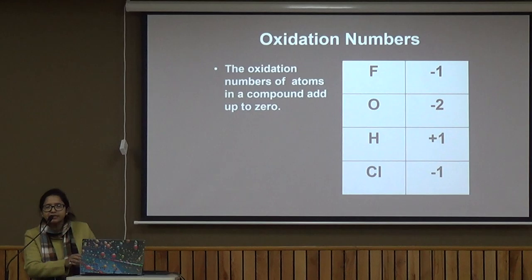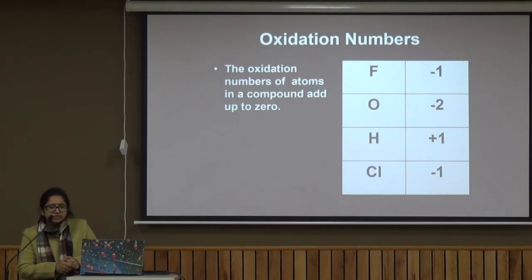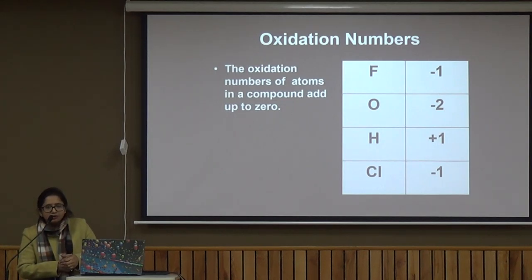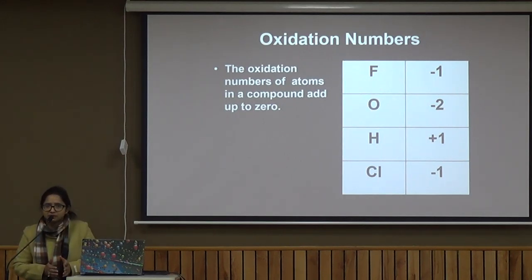What is the oxidation state of carbon in CO₂? The oxidation state of oxygen is fixed at minus 2. In CO₂ there are 2 oxygen atoms, so the total contribution of oxygen is minus 4. Since a neutral compound must have an overall oxidation state of zero, the oxidation state of carbon must be plus 4.